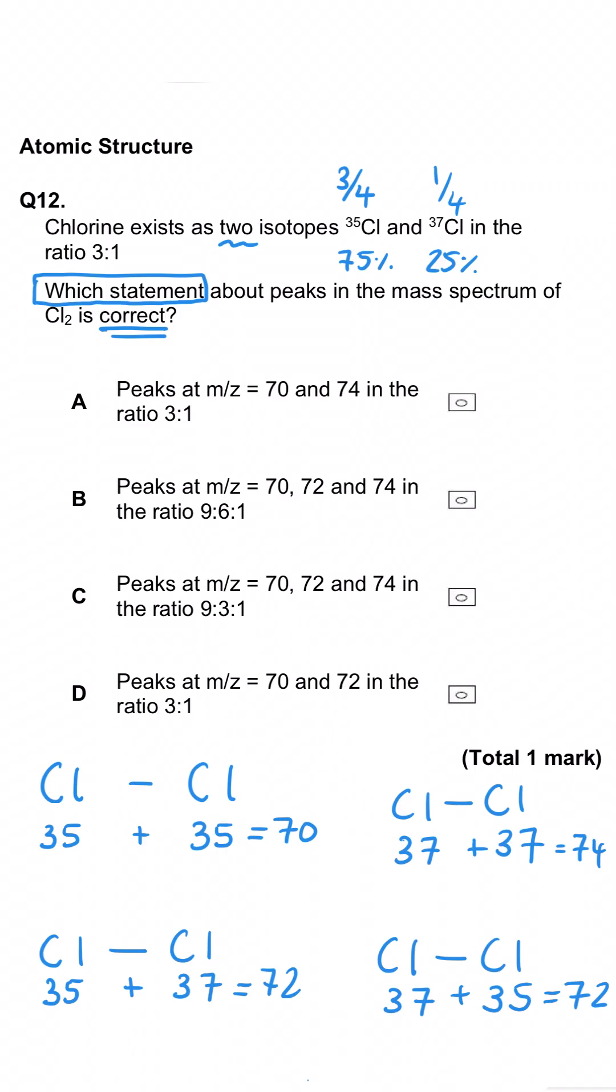So we can instantly rule out A and D because they don't give us peaks of all three of those options. We definitely have three different peak masses. And so then the question is, which is correct, B or C?